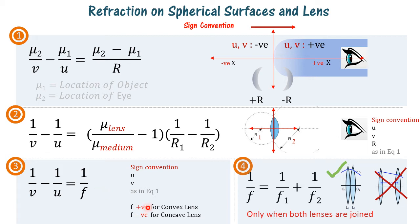Also, f is taken as positive for convex lenses and negative for concave lenses. The fourth equation is for combination of lenses, and it applies only when the two lenses are touching each other, not when they are separate. We will see solved examples of all these equations in subsequent slides.